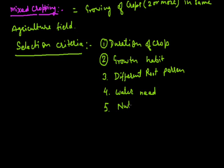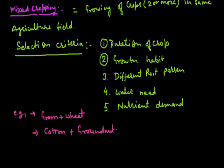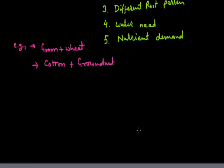The last criteria is nutrient demand. So these are the basic criteria for the selection of two crops for mixed cropping. For example, one crop should be leguminous — such as groundnut — and another should be non-leguminous — such as wheat. These two crops can grow in the same field. Another example is cotton, which is a non-leguminous plant, grown with a leguminous plant. Such type of cropping pattern is called mixed cropping.